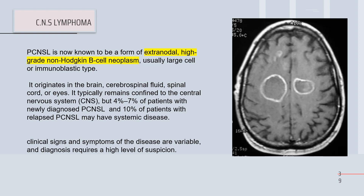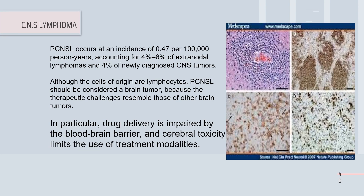Clinical signs and symptoms are totally variable — it may present with CNS manifestations or systemic manifestations. CNS lymphoma accounts for six percent of extranodal lymphomas and four percent of newly diagnosed CNS tumors. Although this is a lymphoma, treatment follows brain tumor protocols.